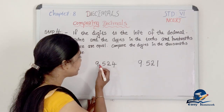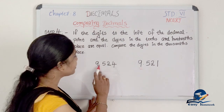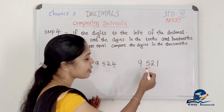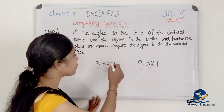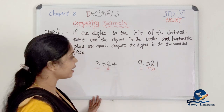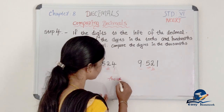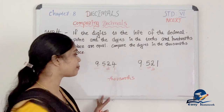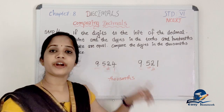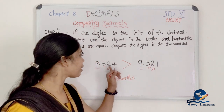The decimal point is here. The left-side digit is 9. To the right of the decimal point, the tenths place is 5. The hundredths place: now we compare. In the thousandths place, 4 is greater than 1. So 9.524 is the greater number.